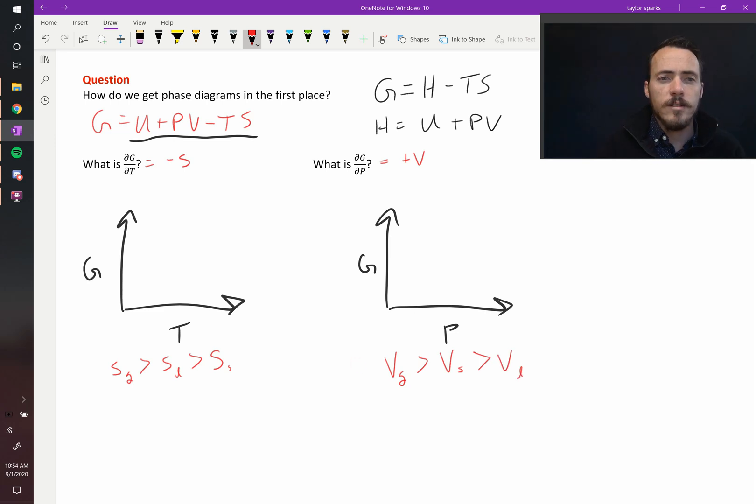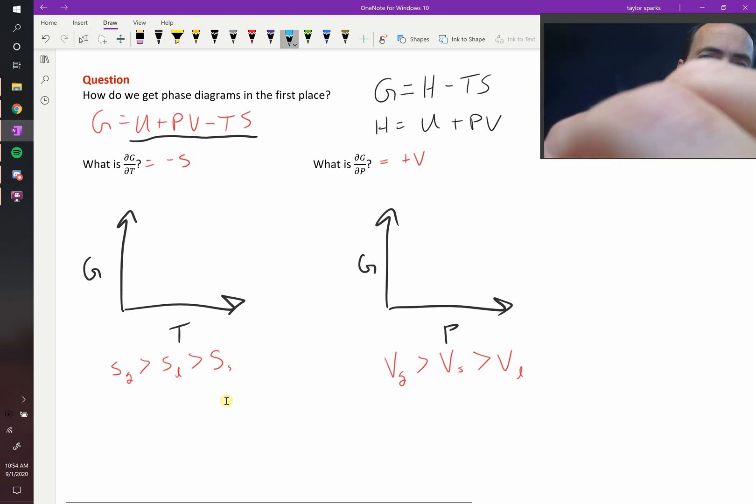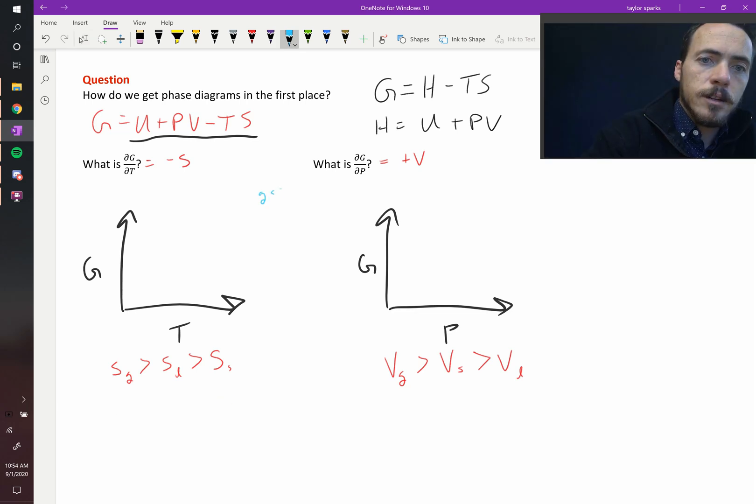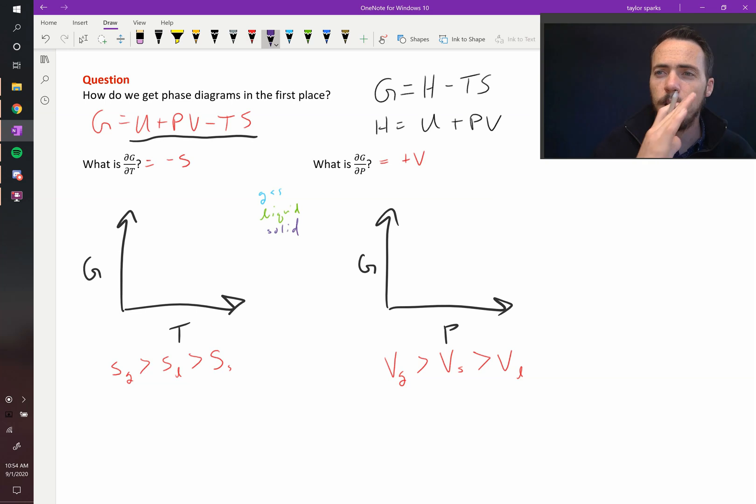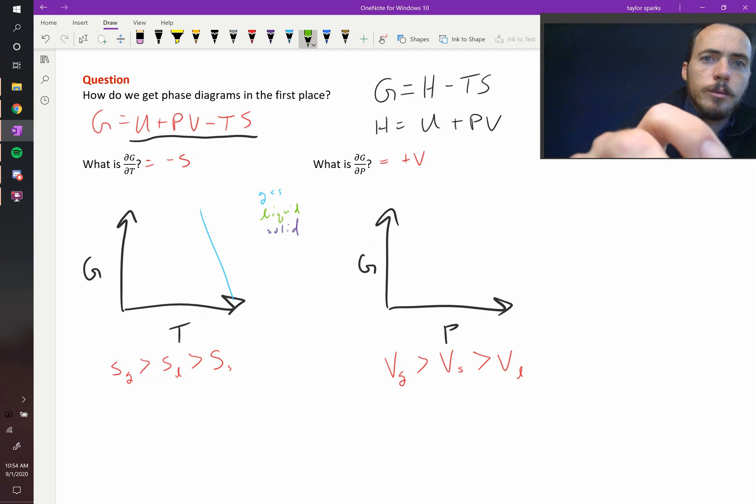So now we can go ahead and sketch these things. Now that we know the general trend, let's use three different colors. This will be our gas color, this will be our liquid color, and this for our solid. So the entropy of a gas is the largest, so we need a steep line. The slope here is going to be the steepest, and it's negative, so let's do that for our gas phase. Then we've got our liquid phase, and then our solid phase.